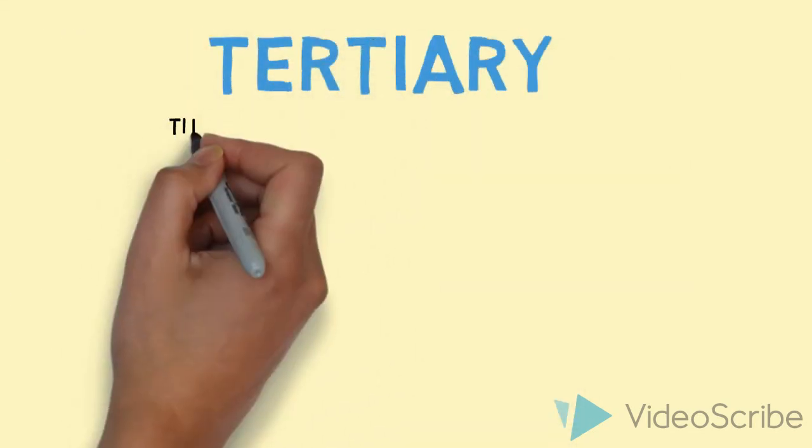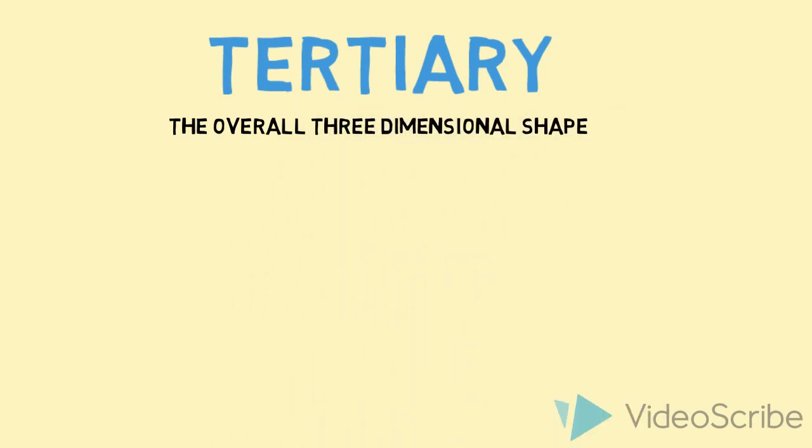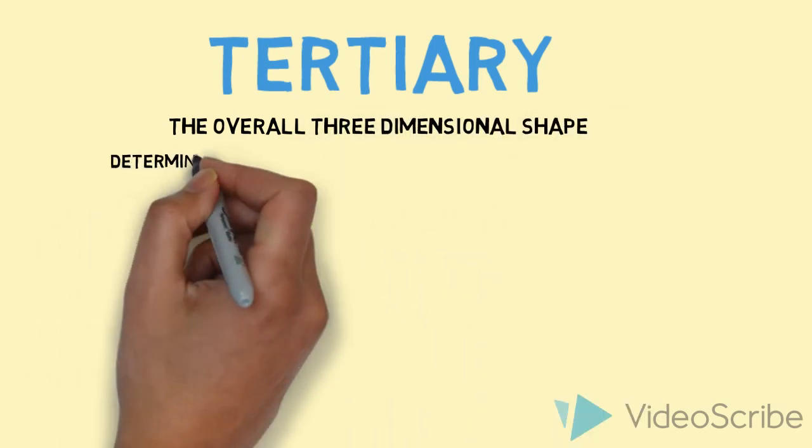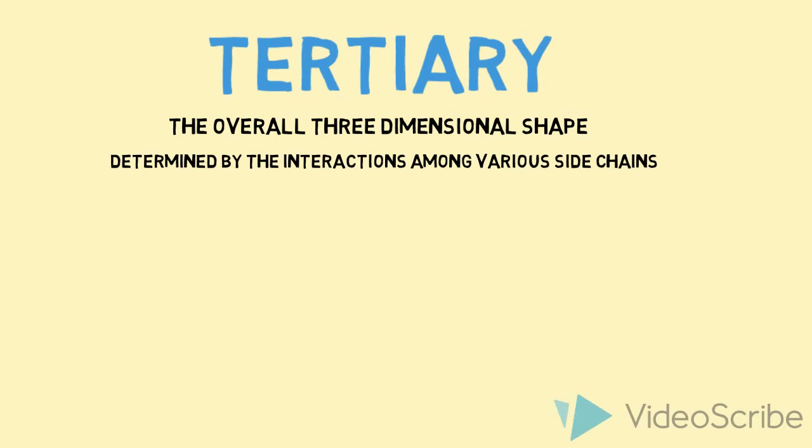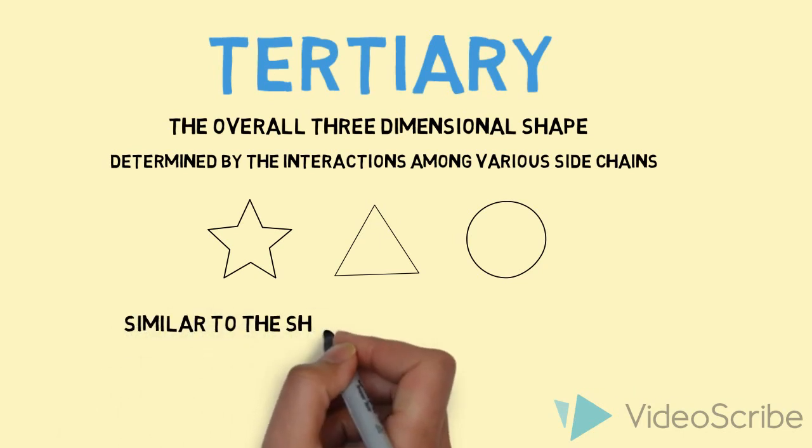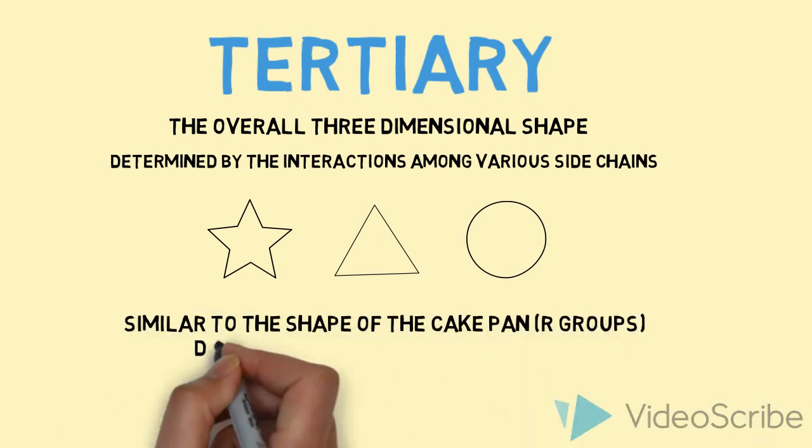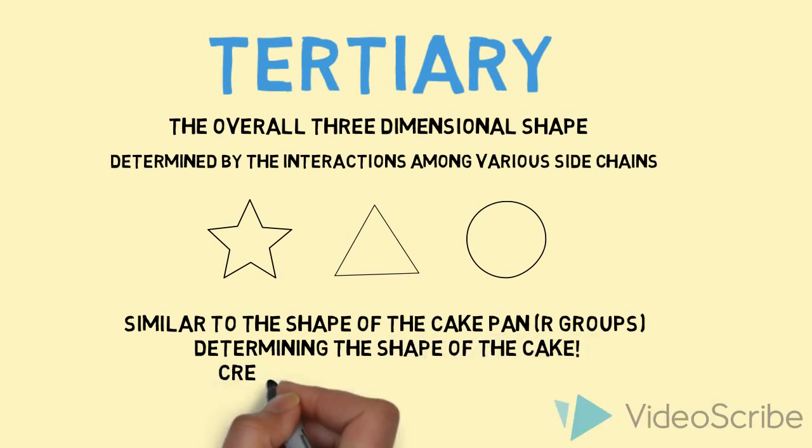Tertiary is next. As we recall, it's the overall three-dimensional shape, determined by the interactions among the various side chains. Different shapes can be formed when you're baking cakes. Similar to the shapes of the cake pan, or the R groups, determining the shape of the cake, creating a 3D shape of the batter.